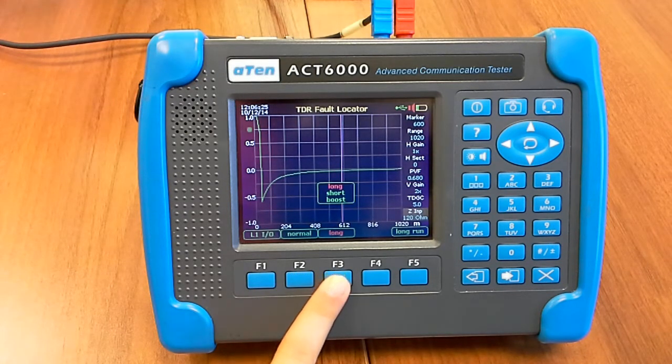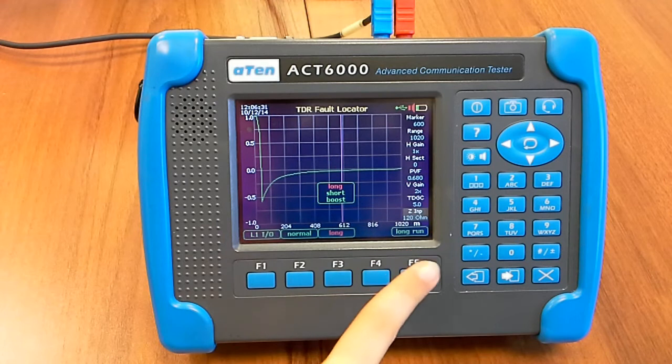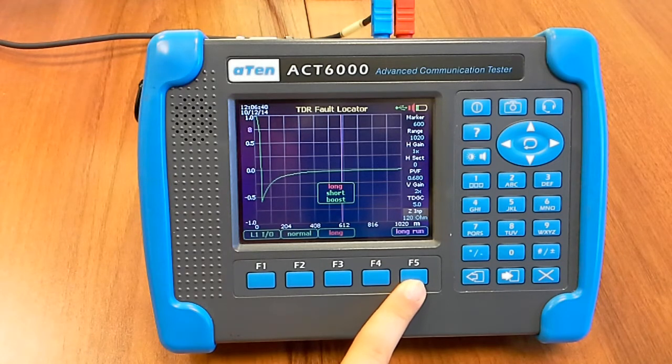Using F3, you can select the Pulse Length: Long, Short, or Boost. Using F5, we can select the Average Test to clean the possible noise.